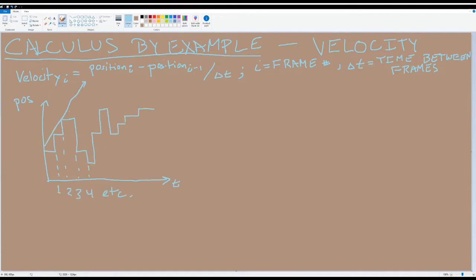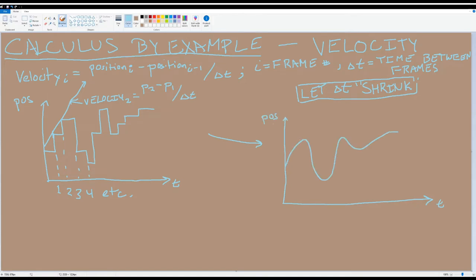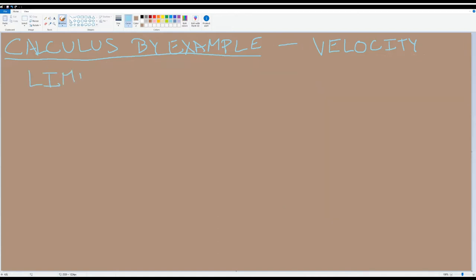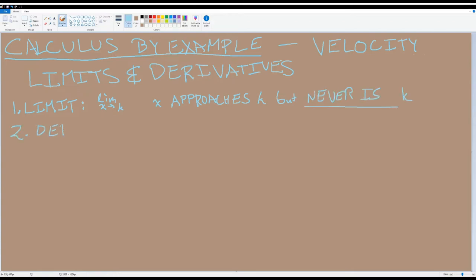Now, imagine we're running our game on an impossibly fast computer, so that way delta time shrinks until it is infinitesimally small. Not zero, but practically zero. Since frames would be happening instantaneously, one after another, our measurement of velocity would become smooth. We've just covered two fundamental ideas of calculus, limits and derivatives. Limits are when a variable approaches but never is a certain number. So in our velocity example, we take the limit of delta time as it approaches zero, and the derivative is the instantaneous rate of change or slope of a curve. In our example, we find the derivative of the position by letting delta time approach zero.